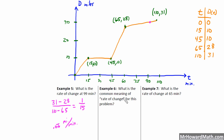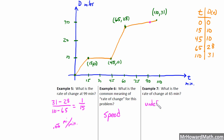Example six: what is the common meaning of rate of change for this problem? In this situation, slope represents speed — miles per minute is a rate, which is a speed. Example seven: what is the rate of change at 65 minutes? That point is a cusp — a point where the function is changing direction. If you were to draw lines about that point, you could draw all sorts of different slopes right there, so the slope at t = 65 is undefined.